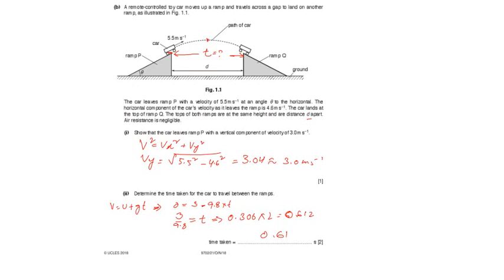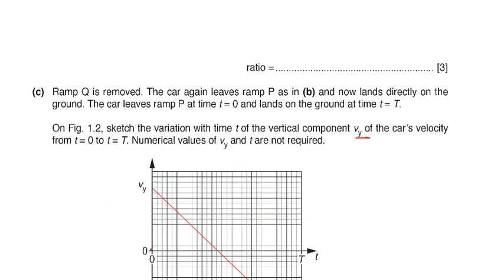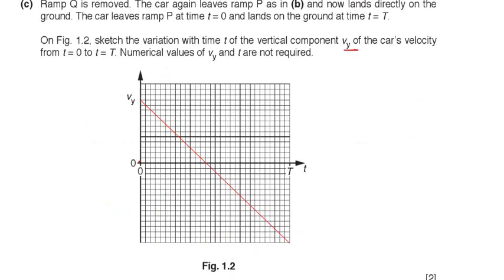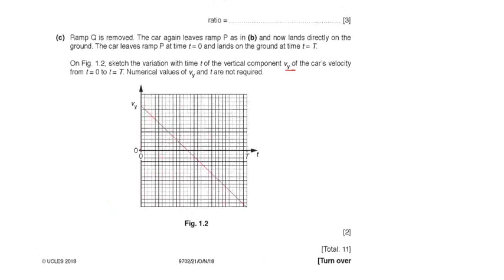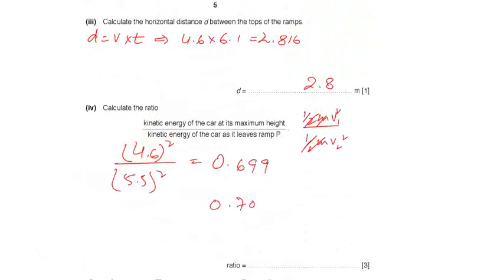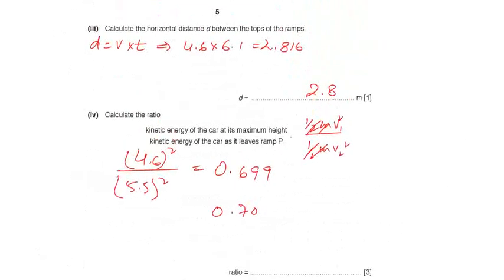Now next, the next phase: calculate the D between the tops of the ramps. So if you know the horizontal range formula, and the velocity of the horizontal component is constant, we will use the standard formula D equals velocity into time.